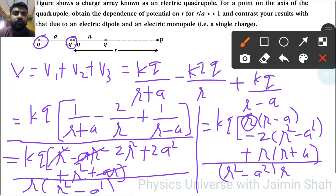Here minus RA plus RA get cancelled out. R square plus 2R square minus 2R square get cancelled out, so we are left with KQ 2A square upon R into R square minus A square. KQ into 2A square upon R into R square minus A square.